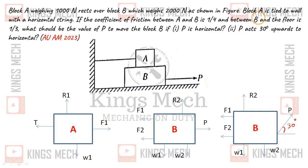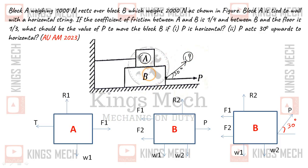There are two conditions: first when P is horizontal, and second when P is at 30 degrees. In both cases, block A's position does not change - A is actually static. So the value of forces on A remains constant for both options. Only block B changes with the value of P.